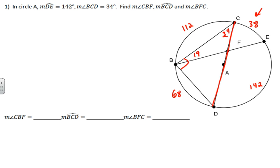And now because this is 54 and this is 19, we can start figuring out what we need to know. It's asked for CBF, which I've already found to be 19. It also asked for arc BCD.